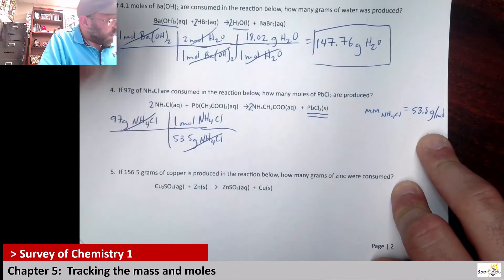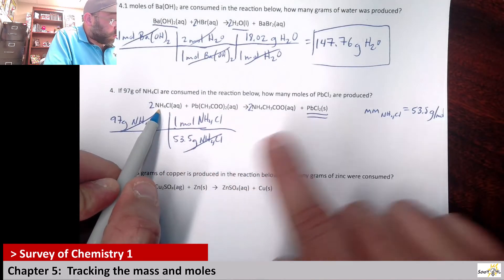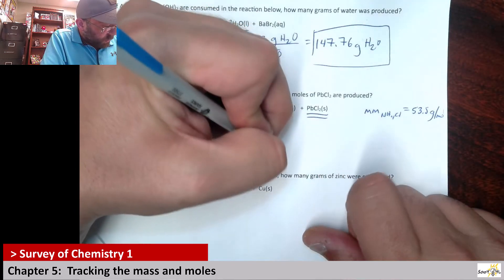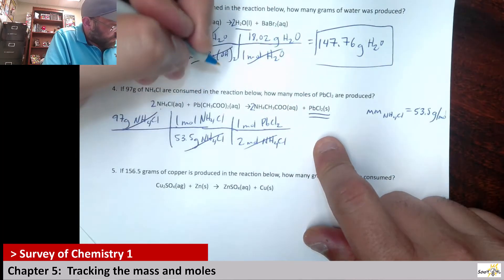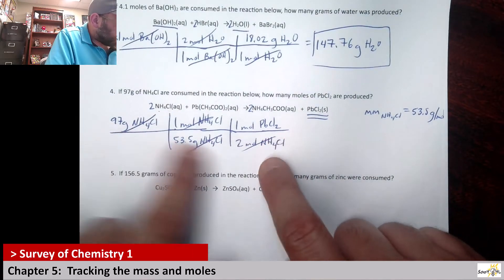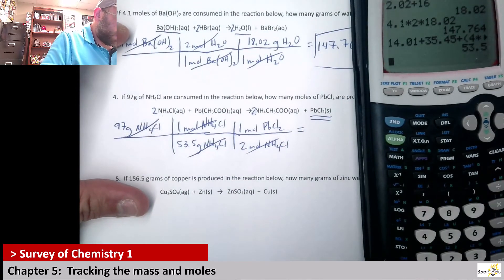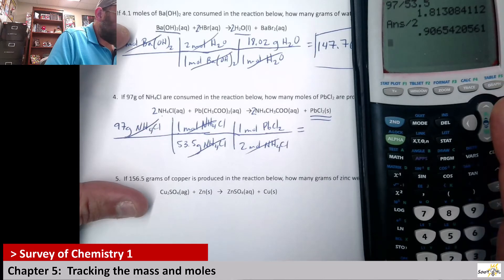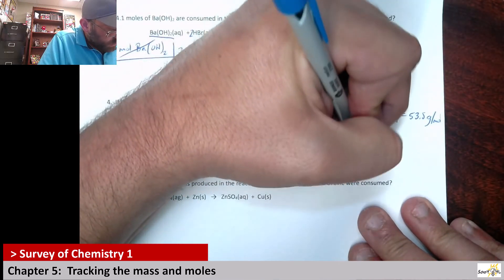I convert to moles because the balanced reaction is a mole relationship — 2 moles of ammonium chloride produces 1 mole of lead(II) chloride. Since the answer is wanted in moles, I stop there. Calculation: 97 ÷ 53.5 ÷ 2 = 0.91 moles of lead(II) chloride.